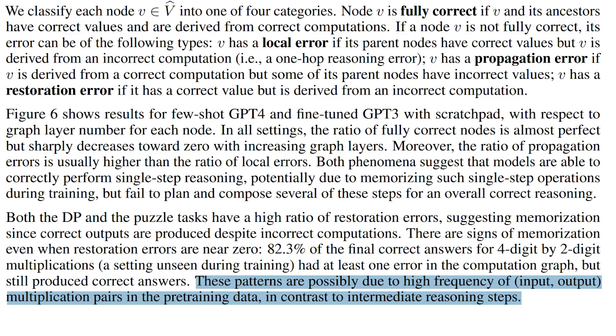This may be explained by the high frequency of multiplication pairs in the pre-training data, but not enough intermediate reasoning steps as the problem size — like the number of multiplication digits — increases. So yeah, language models don't really understand that much, let alone being cognitively capable.